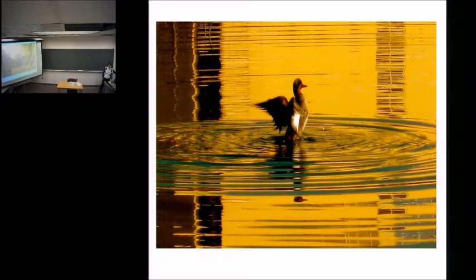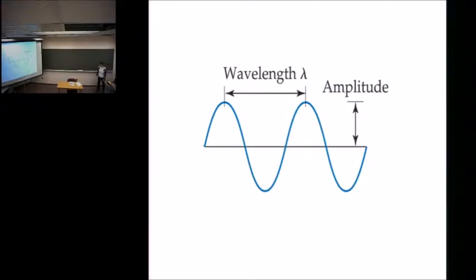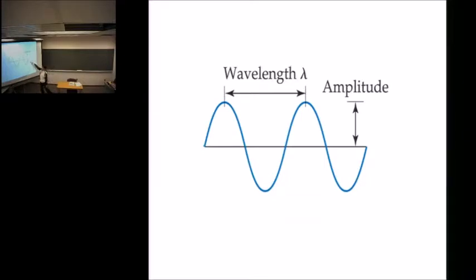We can use certain things to describe waves. We're going to talk about a couple of things we use to describe a wave. One of them is wavelength — it's the distance between two peaks. That's wavelength, and it's given the symbol lambda. Lambda, which is wavelength, is usually measured in nanometers or meters. The conversion between nanometers and meters is ten to the ninth — one meter has ten to the ninth nanometers.